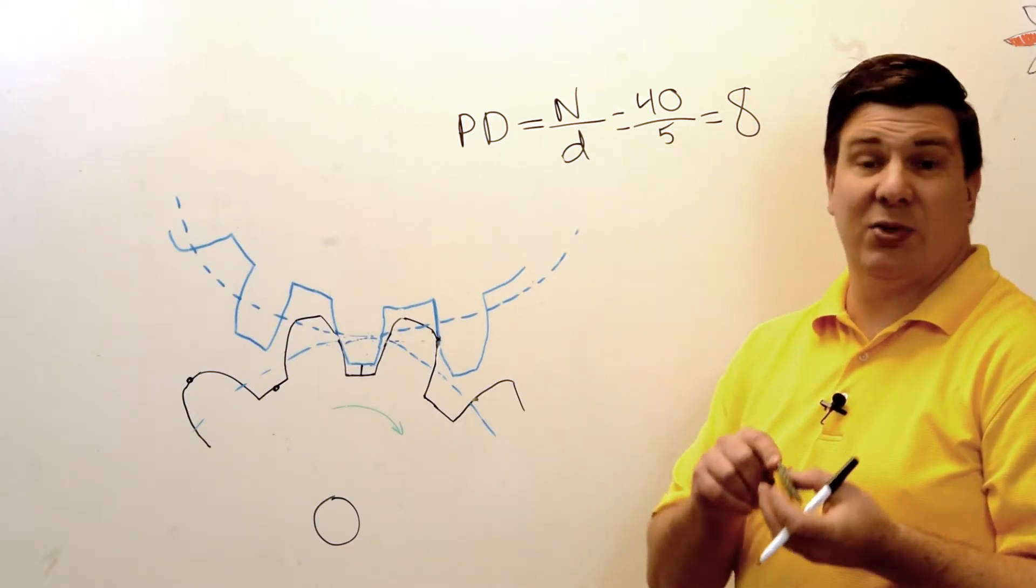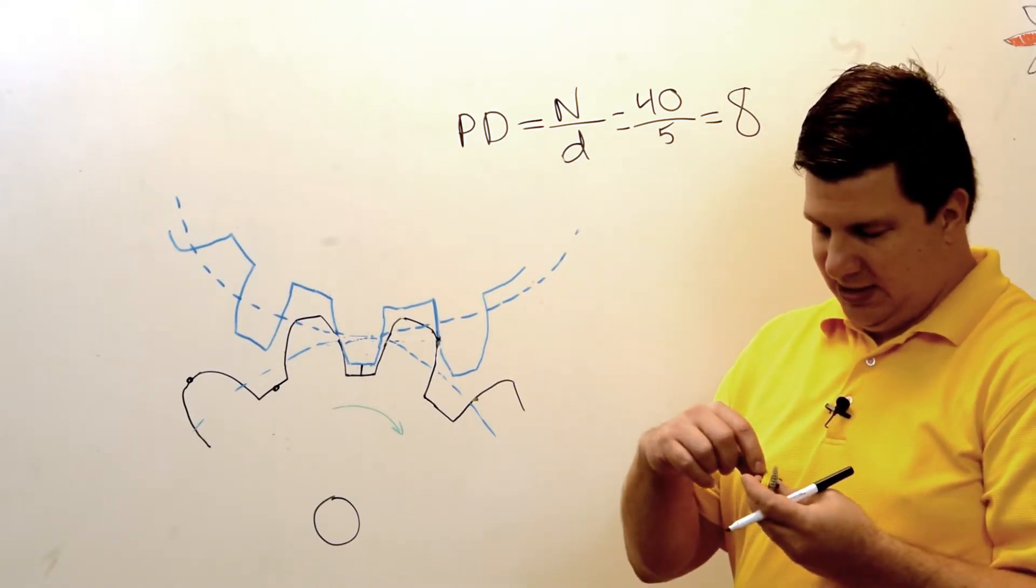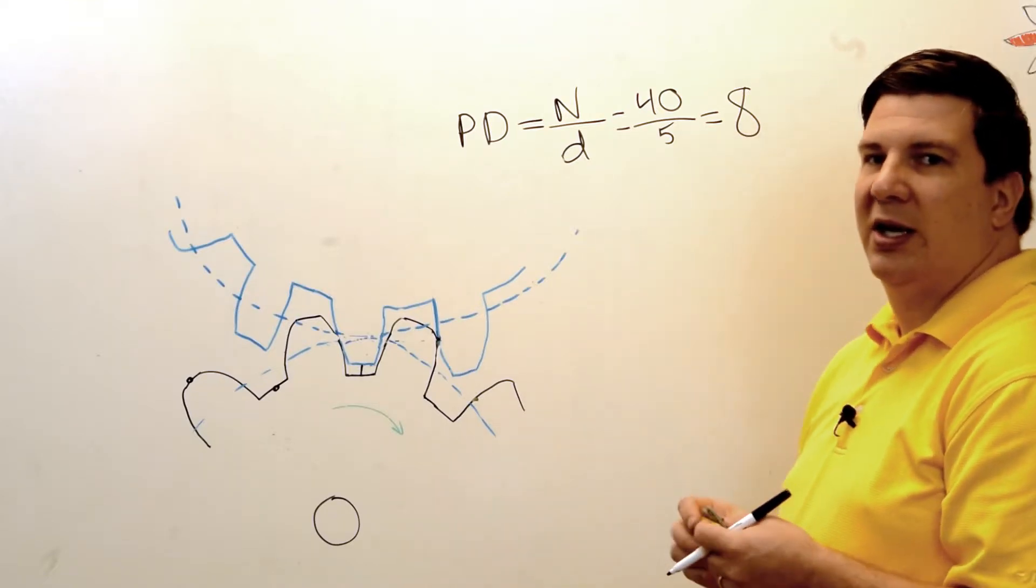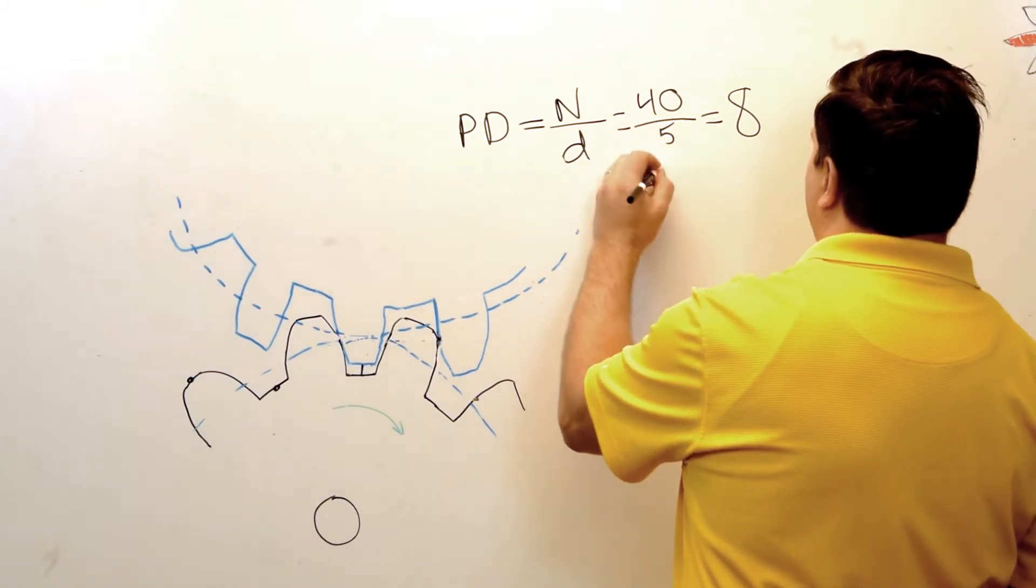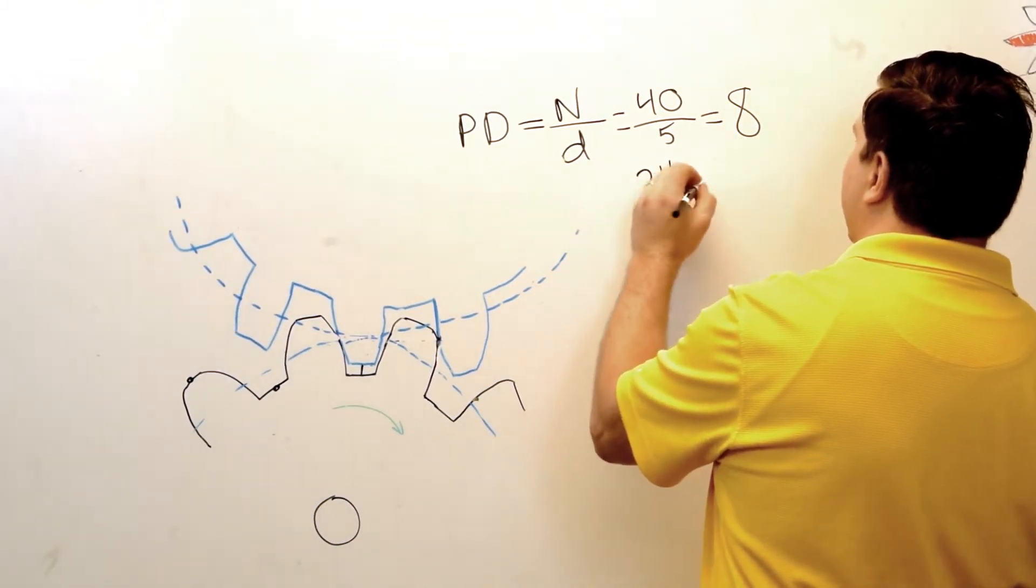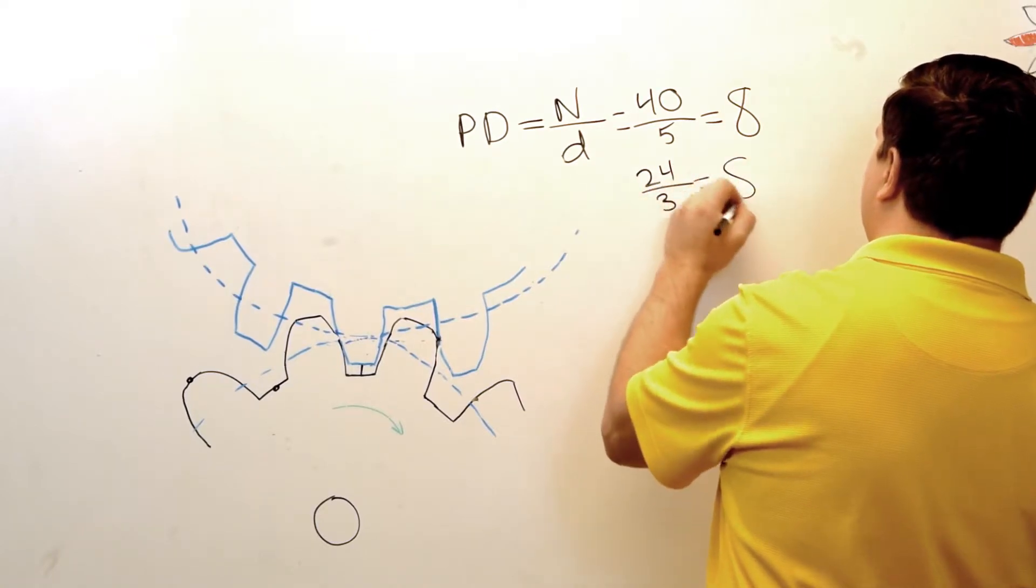On the small one, it's got 24 teeth, and it is one and a half. So multiply it by two, that's three. So I've got 24 divided by three, and that also equals eight.